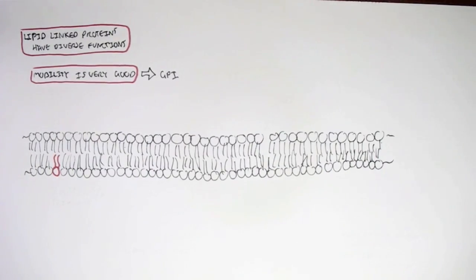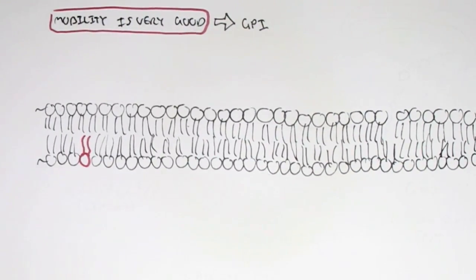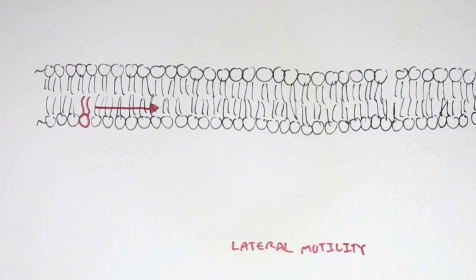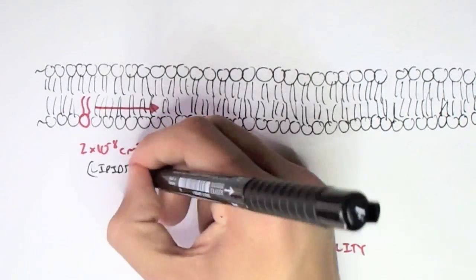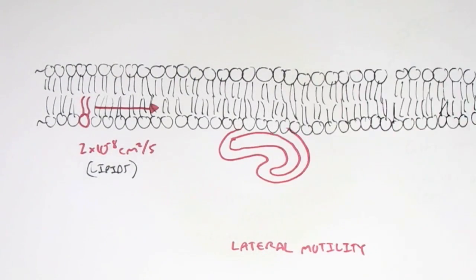So for example, a lipid, a typical lipid, can move through lateral diffusion mobility, so move around the same plane at a rate of about 10 times 10 to the negative 8 centimeters squared per second, which is very, very fast. And this is, of course, a normal lipid, a cell membrane structure.